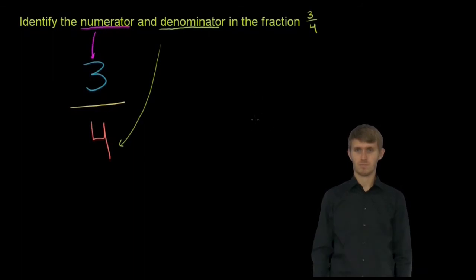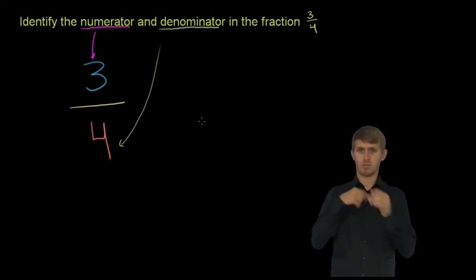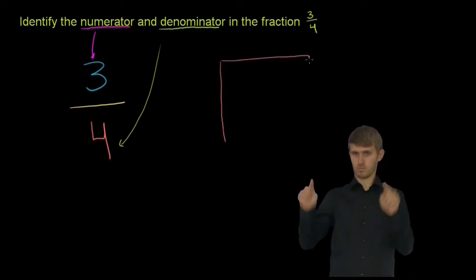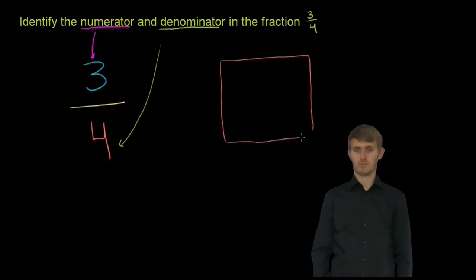So let's imagine a pie like this. We could draw it as a square pie. So this is what the denominator represents. This is what the number on the bottom represents.